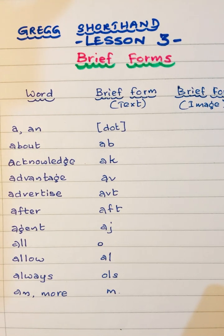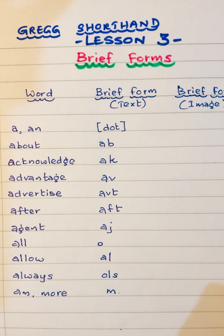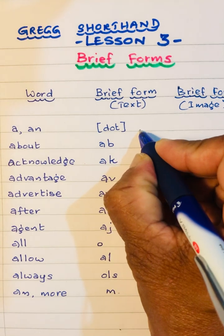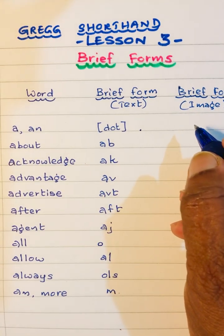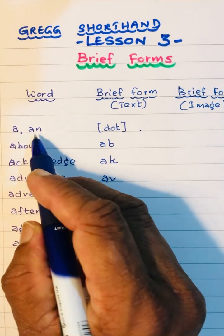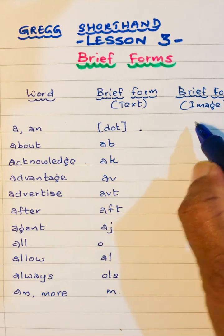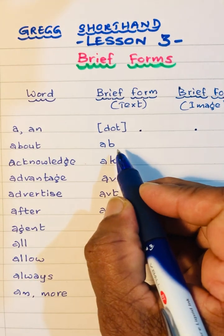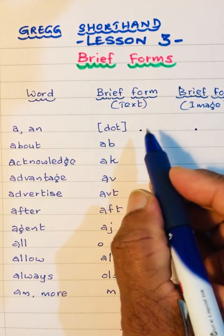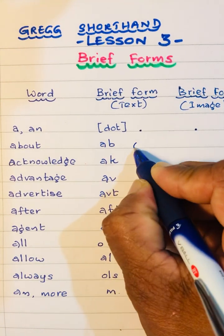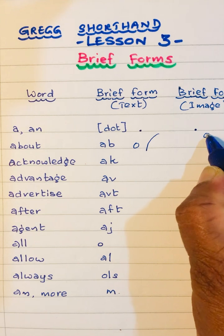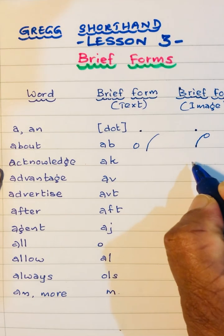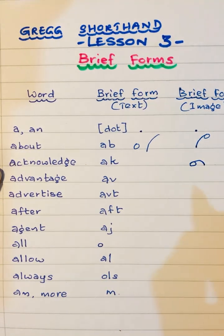In my Lesson 3 of Gregg shorthand, I am doing some brief forms. In my previous lesson I also discussed this. The brief form for 'about' is a-b, then 'about' — it's very easy. 'Acknowledge' is a-k, a-k.